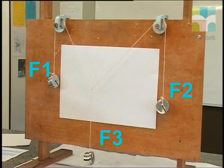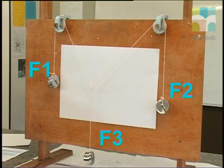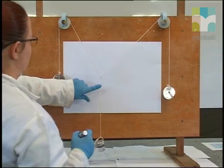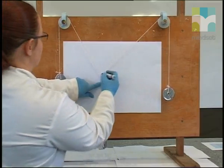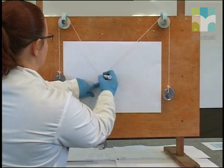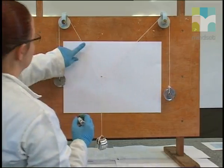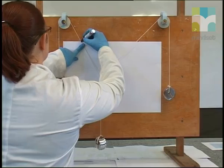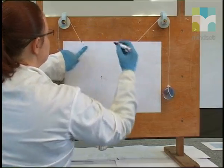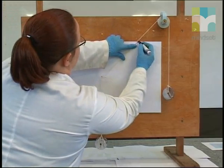The strings and the weights must not rub against the board because we don't want any other forces like friction to come in here and confuse the picture. Now I'll press the knot against the paper and mark its position. I'll also mark the 3 positions where the string crosses the edge of the paper.